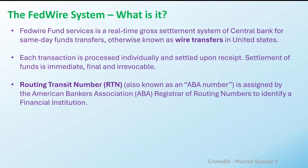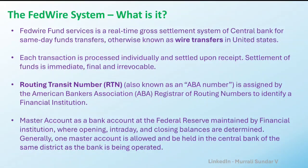When money moves from the sender bank to the receiver bank, the sender bank has to identify the receiver bank. In the US, they use a term called Routing Transit Number, also commonly called the ABA number. The sender bank puts that ABA code of the receiver bank in the message and transfers it to the Fedwire Fund System.